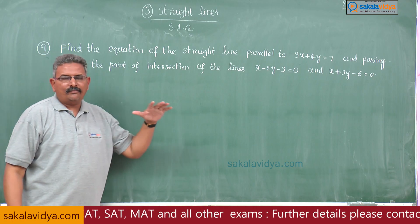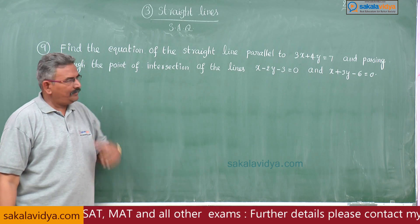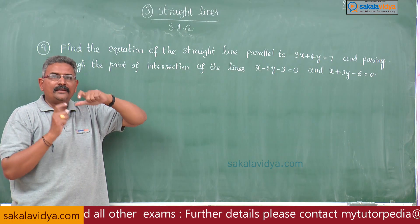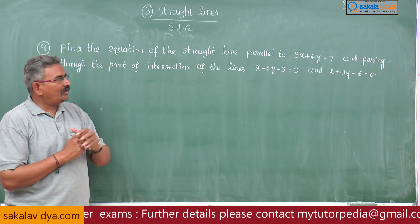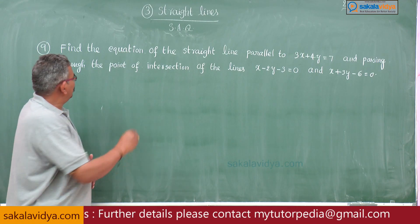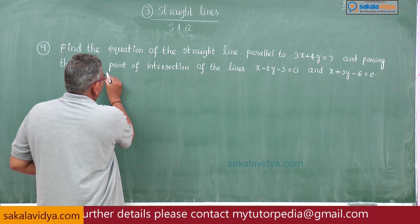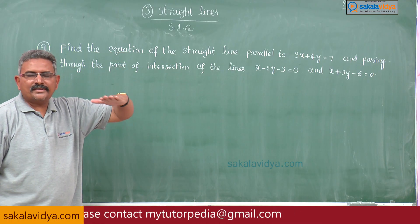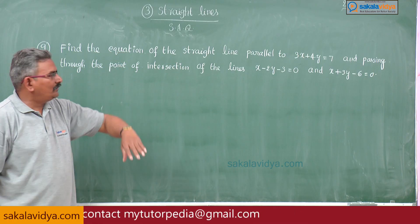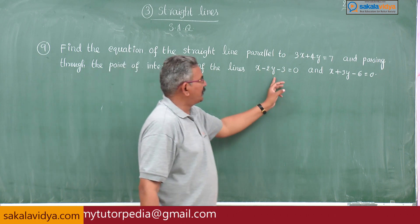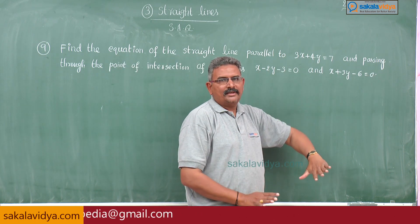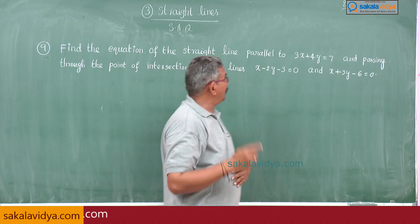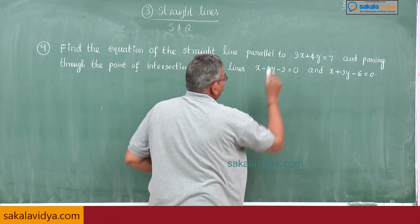First, read the problem very carefully and pick up the keywords. The first keyword is point of intersection of the lines — that is the first step, we have to find out the point of intersection of these two lines. The second keyword is parallel to this line.